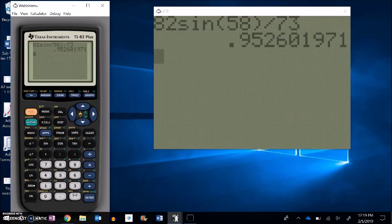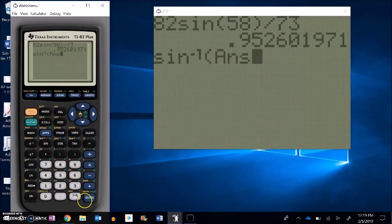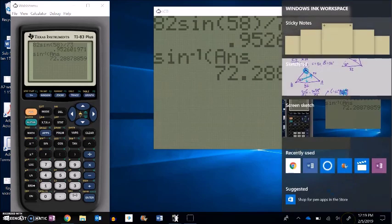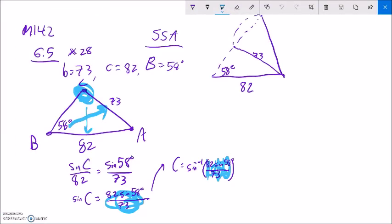Notice that's the value of this. So now I'm going to arc sine that, arc sine of my last answer, and it gives me about 72.3 degrees. So that means that C must be about 72.3 degrees.